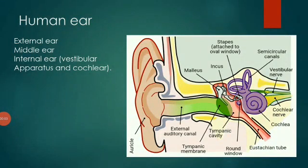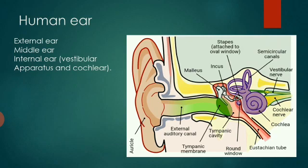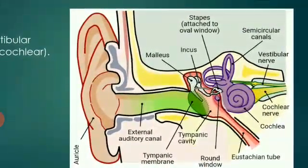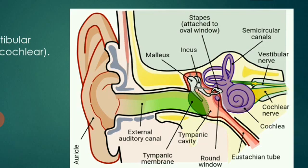The human ear can be divided into the external ear, middle ear, and internal ear. The external ear consists of the pinna, which is a characteristic feature of mammals. The purpose of the ear pinna is to collect sound waves and carry them into the ear canal.